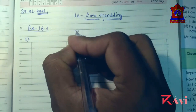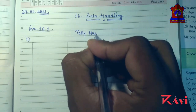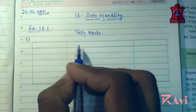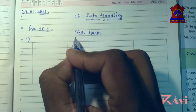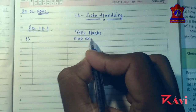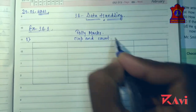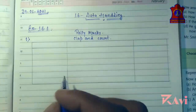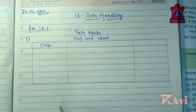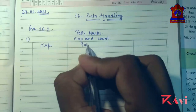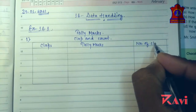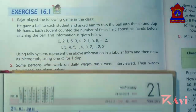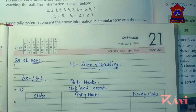We will write tally marks and give a heading to this table. The heading is 'Clap and Count'. In the first column we will add the number of claps, in the second column tally marks, and in the third column the number of claps count.